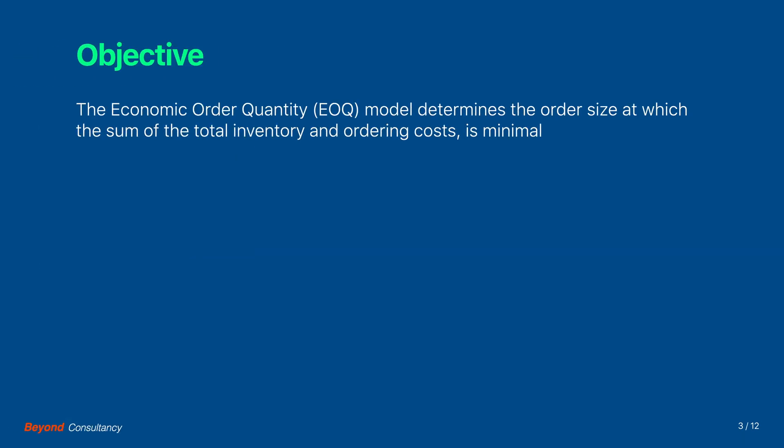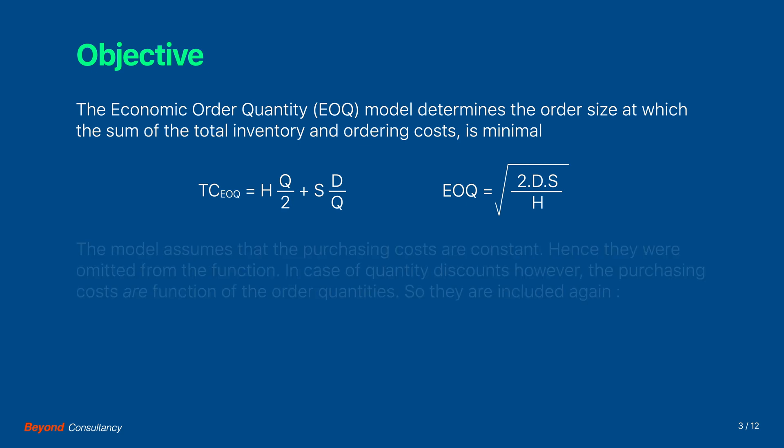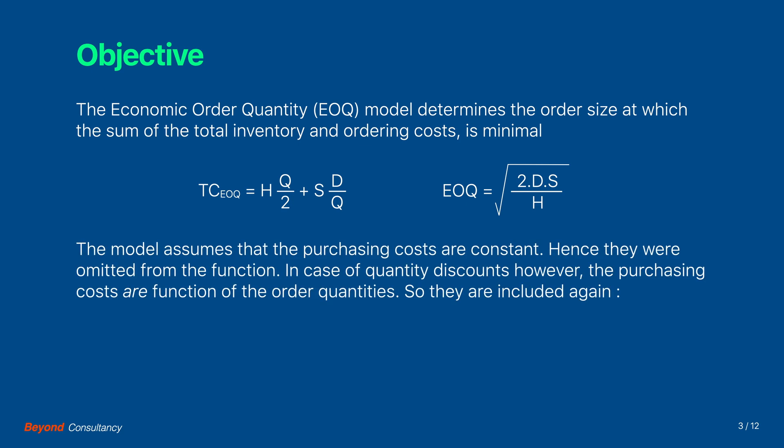The economic order quantity model determines the order size at which the sum of the total inventory and ordering costs is minimal. This is the total cost function and this is the formula determining the optimal order size. The model assumes that the purchasing costs are constant, hence they were omitted from the cost function.